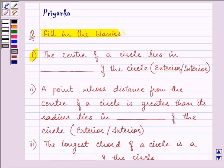Now the first blank says the center of a circle lies in blank of the circle. Whether it lies in the exterior or interior, we need to tell.